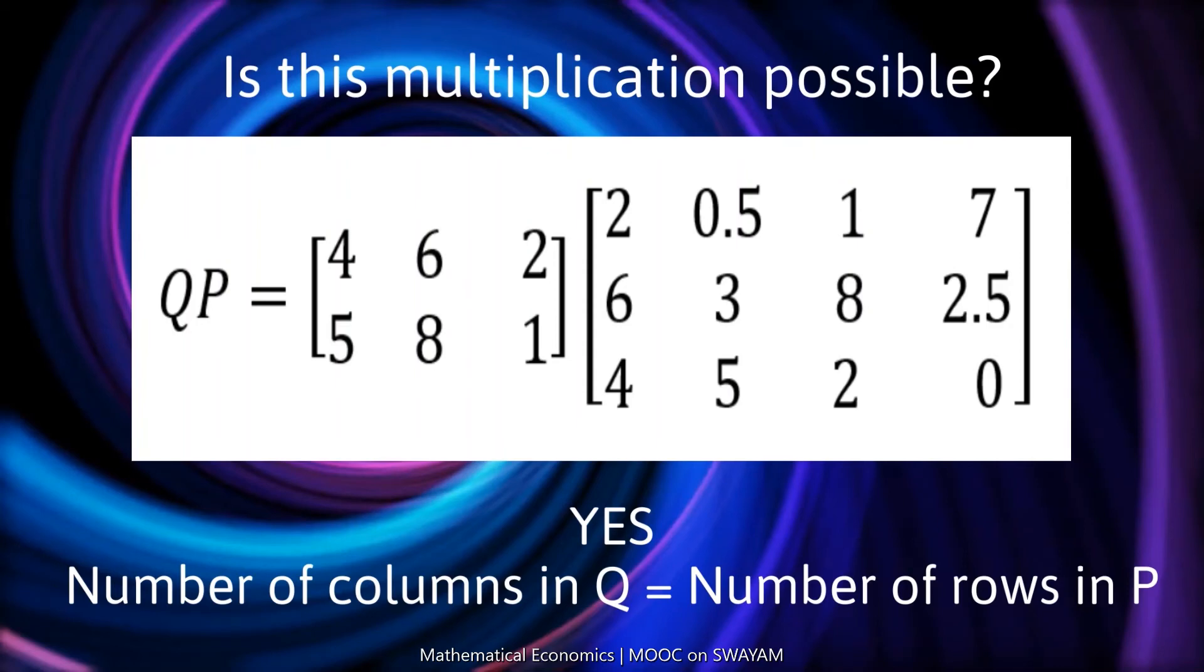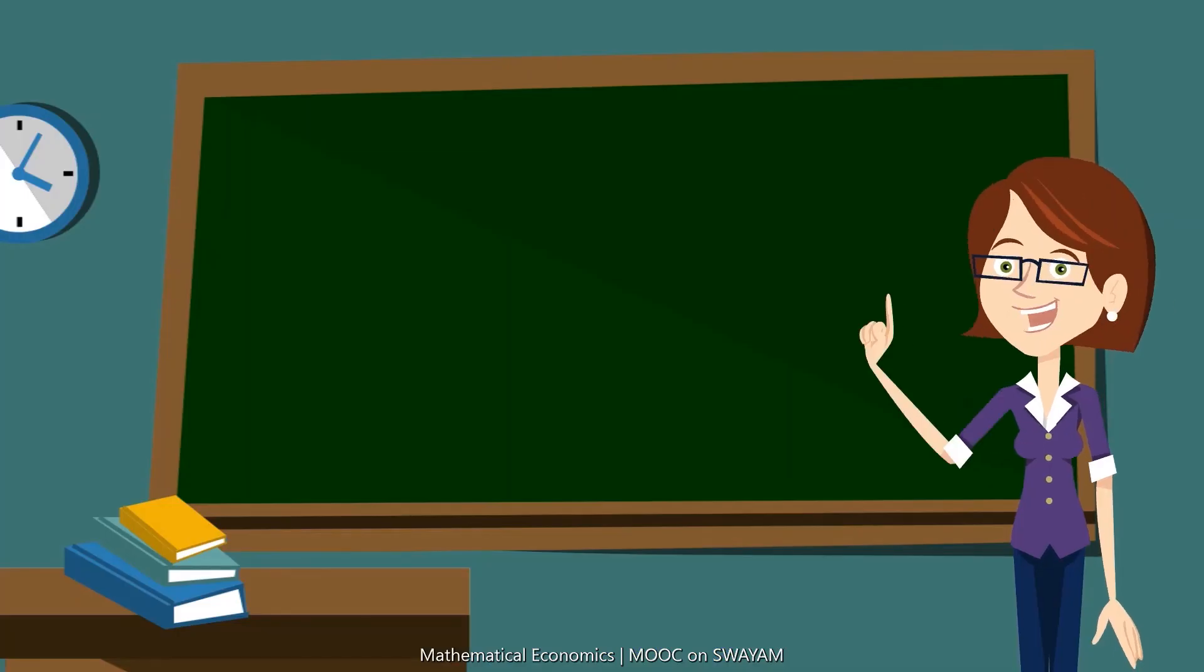So, multiplying the two matrices gives QP.